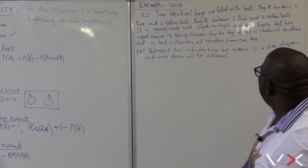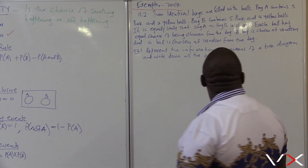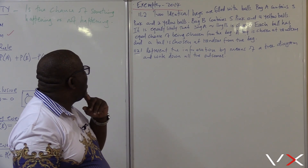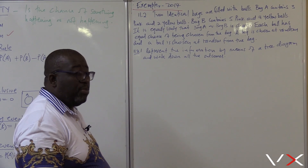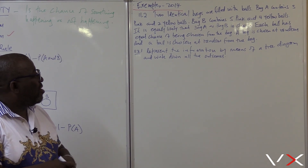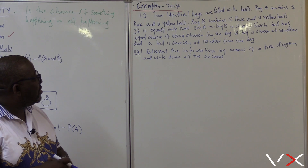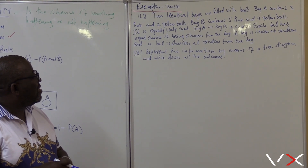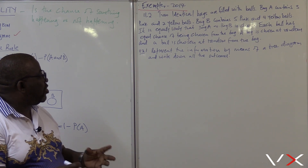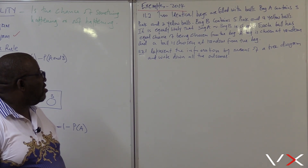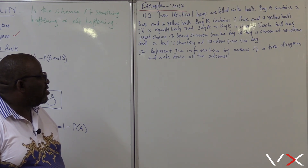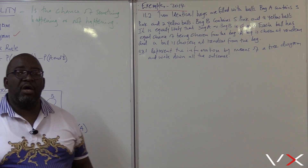The question says: two identical bags are filled with balls. Bag A contains three pink and two yellow balls. Bag B contains five pink and four yellow balls. It is equally likely that bag A or bag B is chosen, and each ball has an equal chance of being chosen from the bag. A bag is chosen at random and a ball is chosen at random from the bag. Represent the above information by means of a tree diagram and write down all the outcomes.